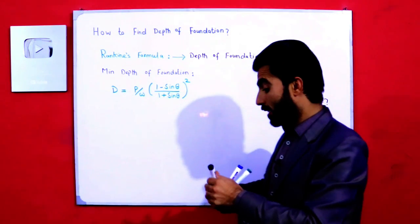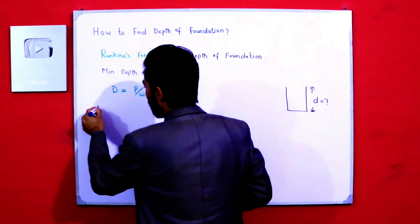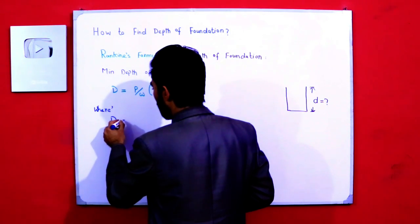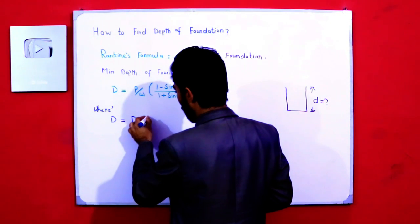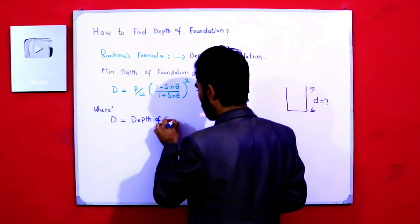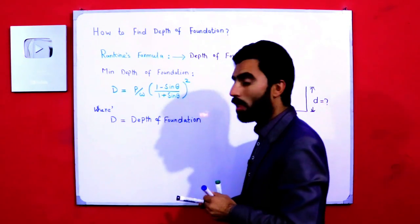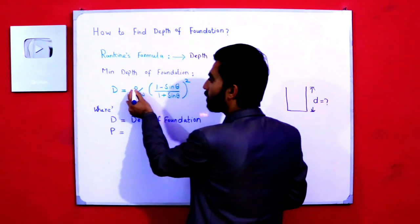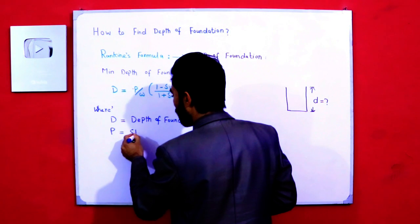Now, what is D in this formula? D means depth of foundation. And what is p? P is the structural load on foundation, also called building load.